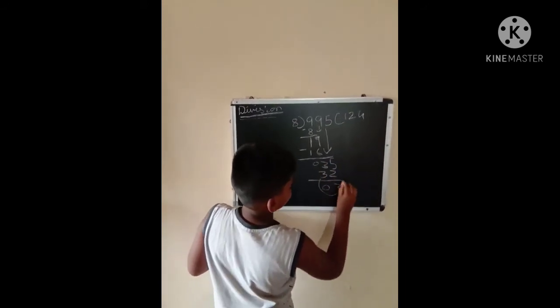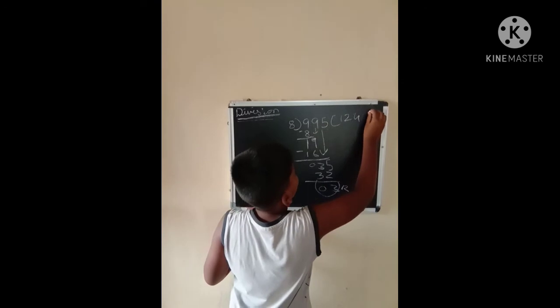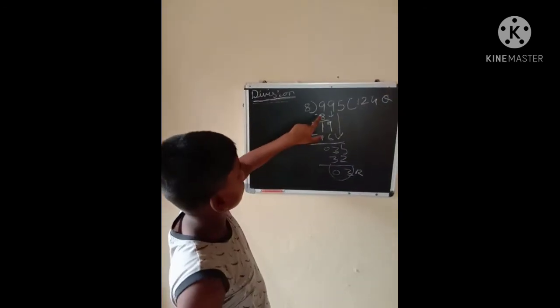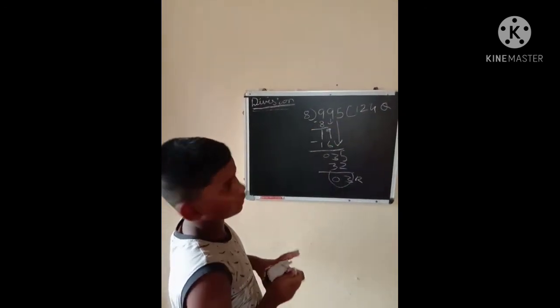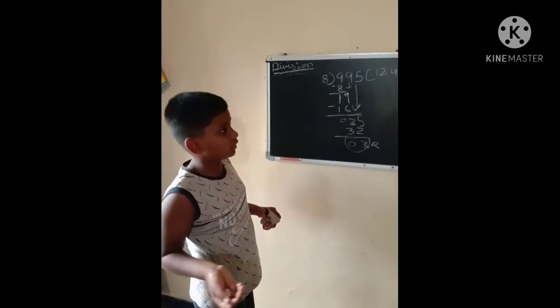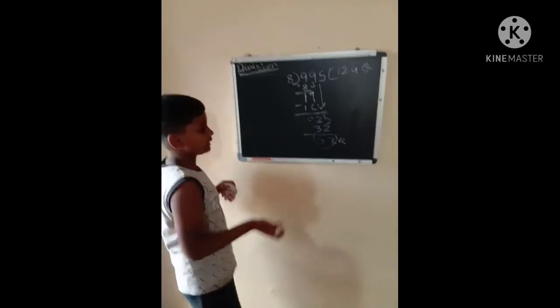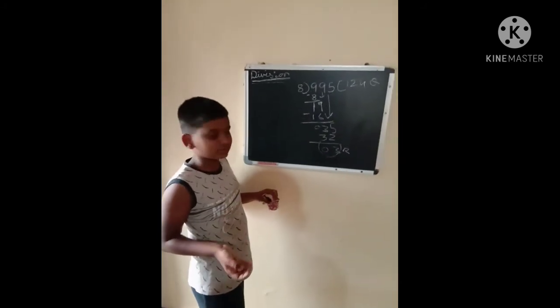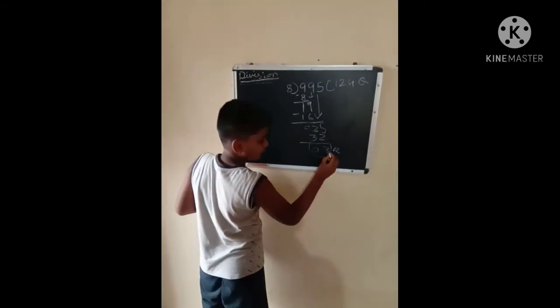Remainder is 3 and quotient is 124. In 995 chocolates, I will give to my 8 friends 124 chocolates equally. And how many chocolates will I have remaining? I will have 3 chocolates remaining.